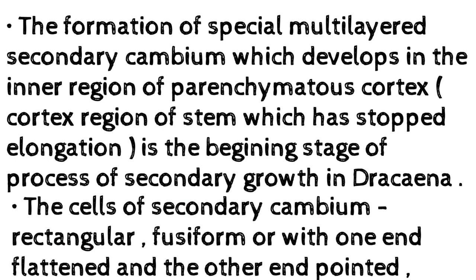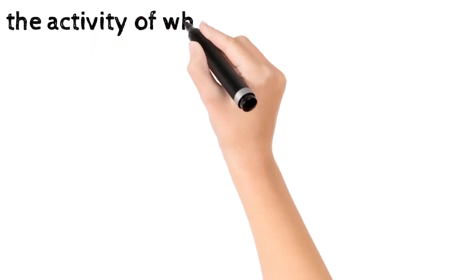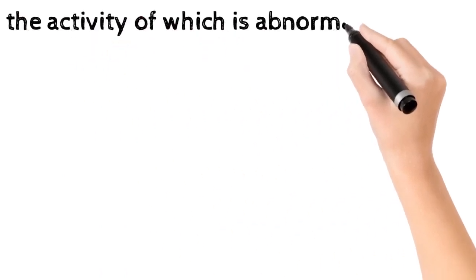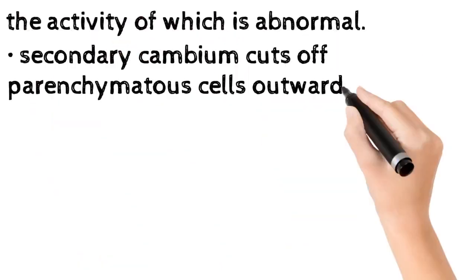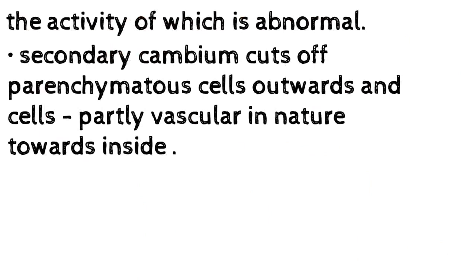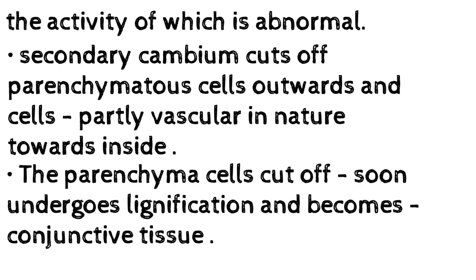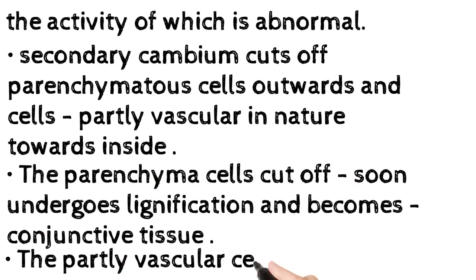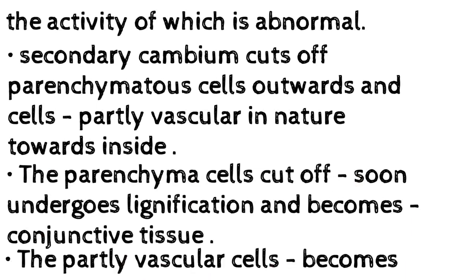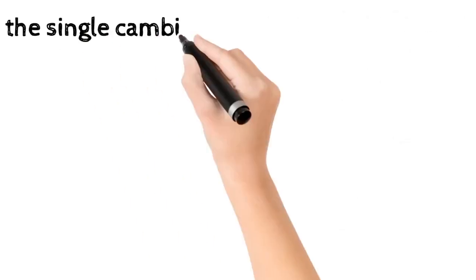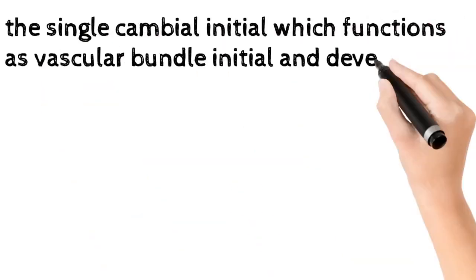The cells of the secondary cambium are rectangular, fusiform, or with one end flattened and the other end pointed. The activity of this secondary cambium is abnormal — it cuts off parenchymatous cells outwards and cells partly vascular in nature towards the inside. The parenchyma cells cut off soon undergo lignification and become conjunctive tissue.